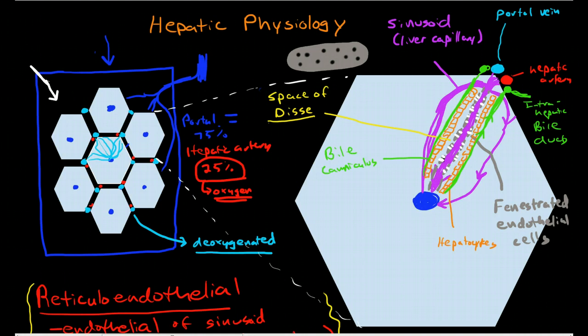Now this is where the hepatocytes will secrete the bile salts that they are synthesizing and the conjugated bilirubin. They secrete this through this surface into the bile canaliculi which drain into the bile ducts.